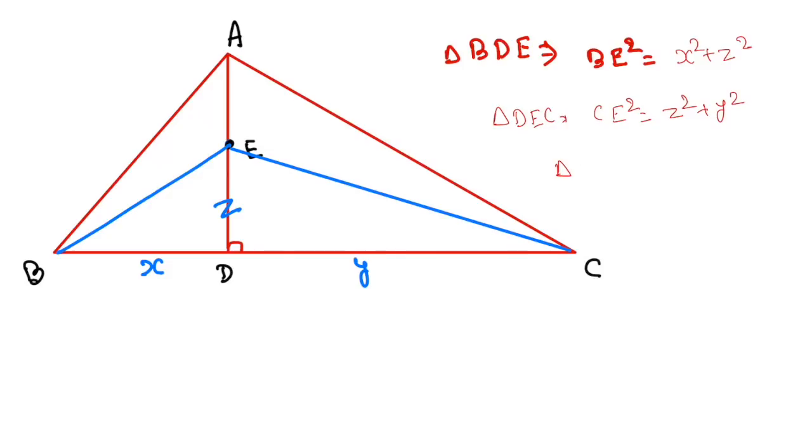Work Pythagoras in triangle ABD. Can I ask what is the AB² in the ABD? If we talk about the AB² in the ABD is nothing but x² plus AD². If we work in triangle ADC, again the Pythagoras, AC² is nothing but AD² plus y².